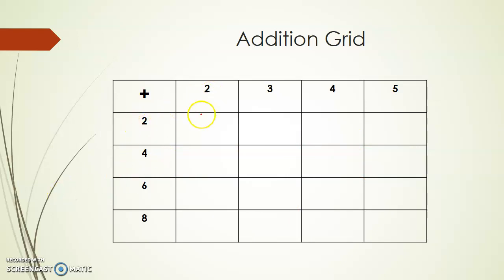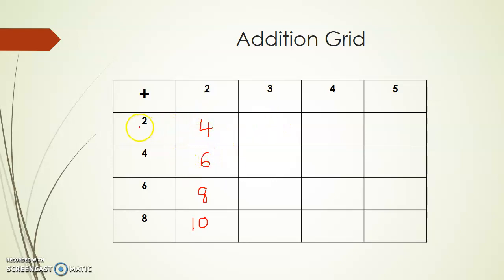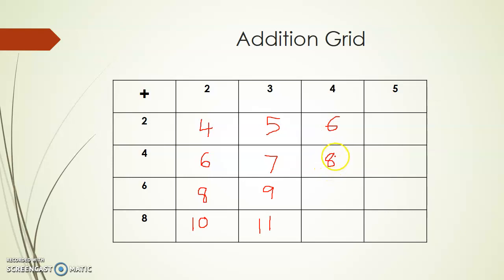So 2 plus 2 is 4. Now to fill this column: 4 plus 2 is 6, 6 plus 2 is 8, 8 plus 2 is 10. You add the row value and column value at the corresponding position. So 2 plus 3 is 5, 4 plus 3 is 7, 6 plus 3 is 9, 8 plus 3 is 11. Then 2 plus 4 is 6, 4 plus 4 is 8, 6 plus 4 is 10, 8 plus 4 is 12.